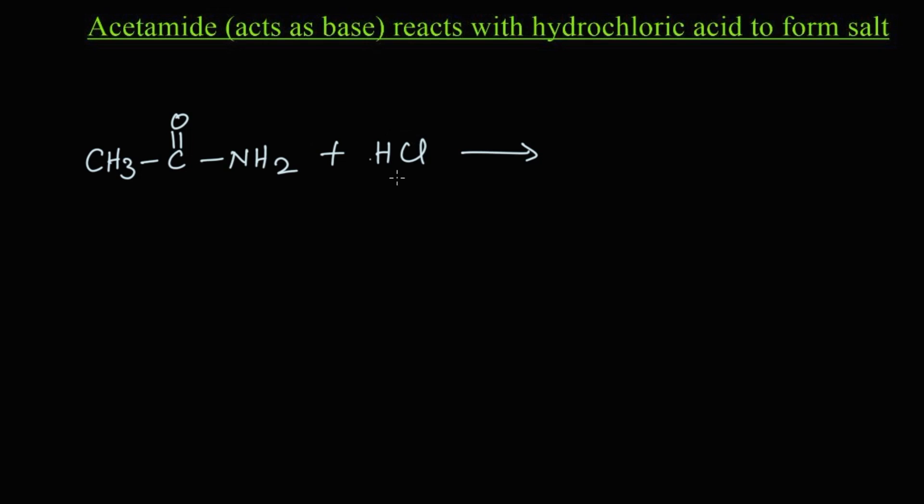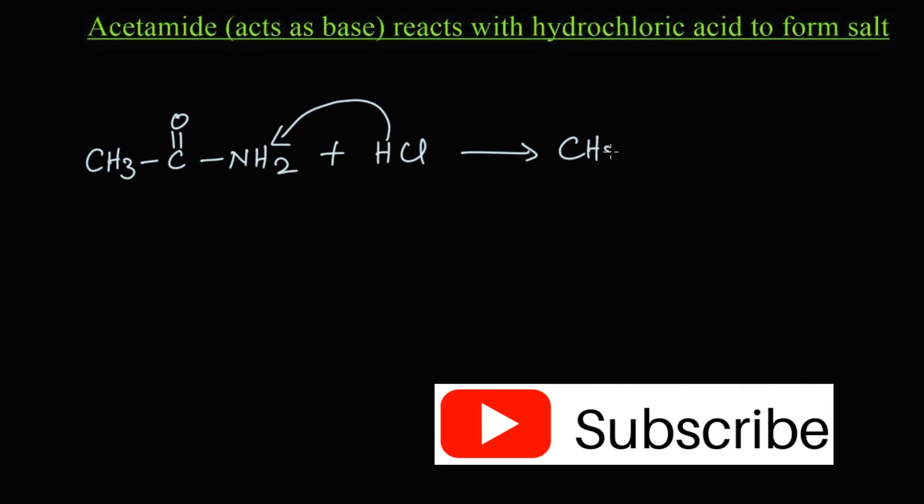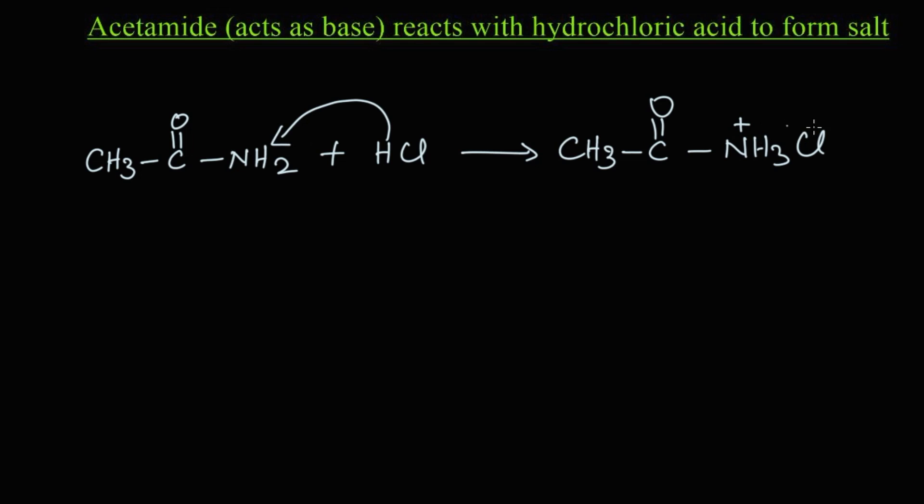When acetamide reacts with HCl, this HCl group will get attached to this acetamide and we get CH3-C double bond O-NH3Cl. That is, here this ammonia carries positive charge and chlorine carries negative charge. This is a salt which is called acetamide hydrochloride. Come on, let's write the name for these structures.